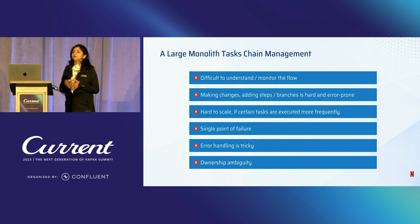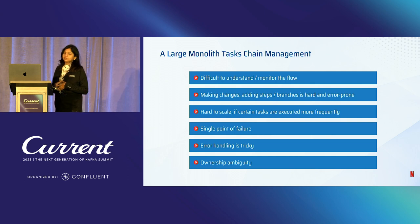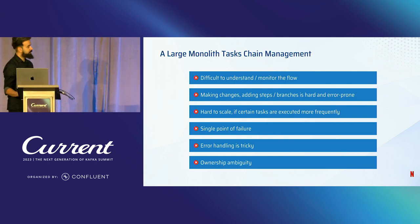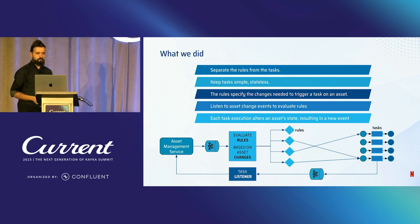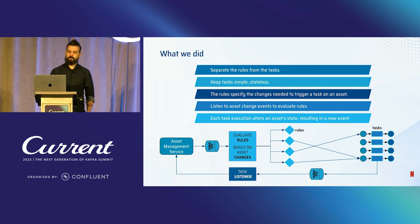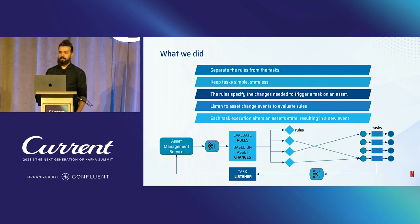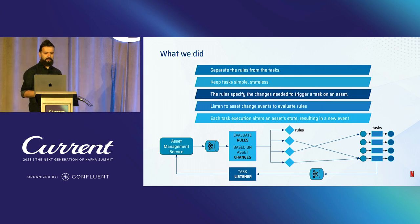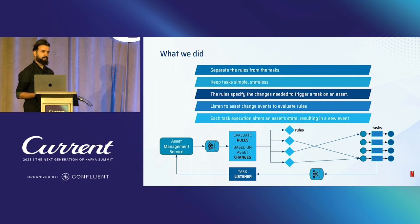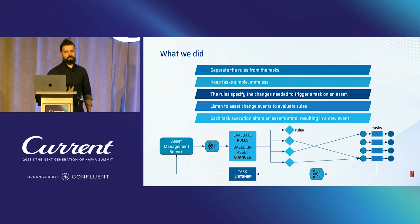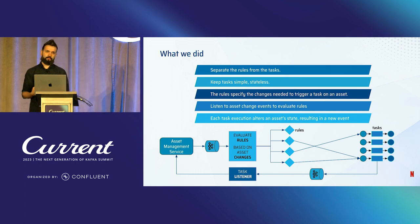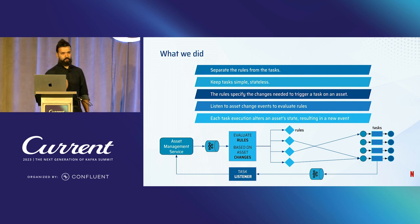To handle all these complications, we designed our system using event-driven architecture. To address this, we split the problem into two: evaluation of tasks and execution of tasks. We keep tasks very simple — like micro workflows — mostly idempotent, stateless, and at most one to two steps. We introduced a rule engine that listens to events from the asset management service. Whenever an asset is created or updated, we send an event to Kafka, and we listen to these events to decide which tasks to execute based on rules defined in our system.